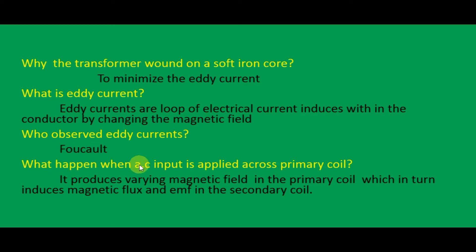What happens when AC input is applied across the primary coil? There are two types of coils: primary and secondary. When we apply AC input to the primary coil, the AC input produces a varying magnetic field in the primary coil, which in turn induces magnetic flux and EMF in the secondary coil — that is, electromotive force or voltage in the secondary coil.